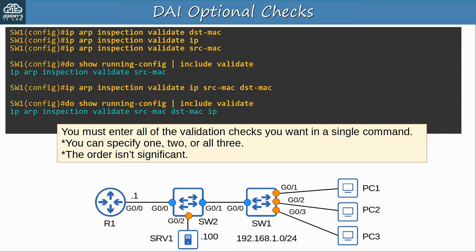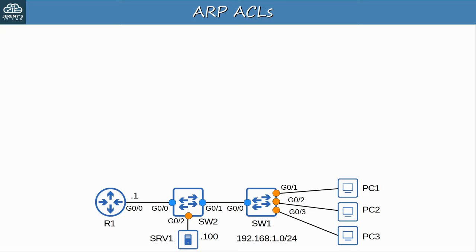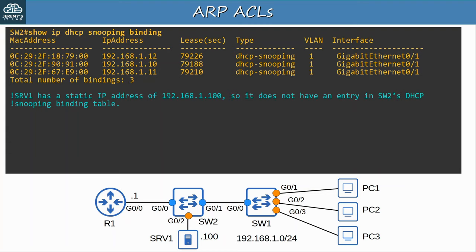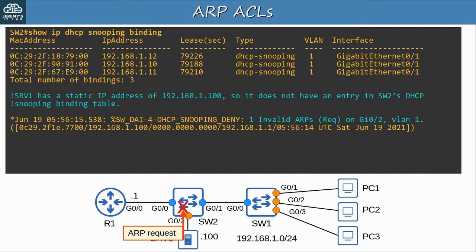Now there is one more topic: ARP ACLs. The configuration of ARP ACLs is likely beyond the scope of the CCNA exam, so I'll give a quick example. Here is SW2's DHCP snooping binding table. Server 1 has a static IP address, 192.168.1.100, so it doesn't have an entry in SW2's DHCP snooping binding table. When server 1 tries to send an ARP request, it will be dropped with an error message saying '1 invalid ARP request on G0/2 in VLAN 1' — because server 1 doesn't have an entry in the binding table.